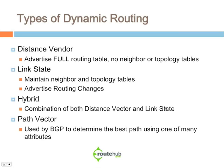Link state routing protocols also only advertise routing changes, not the entire routing table. A hybrid is a combination of both distance vector and link state. A path vector is used by BGP to determine the best path using one of many attributes, which we will discuss on the BGP slide.